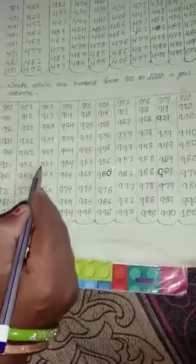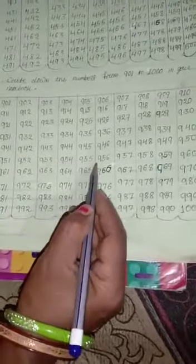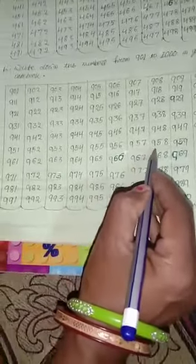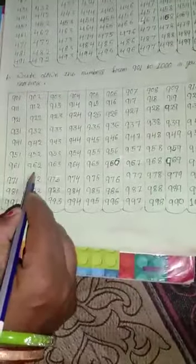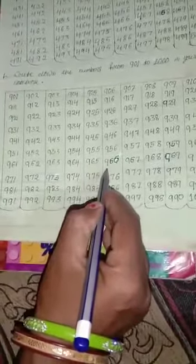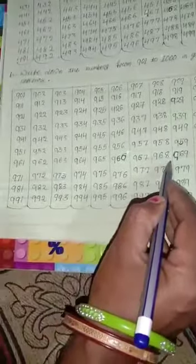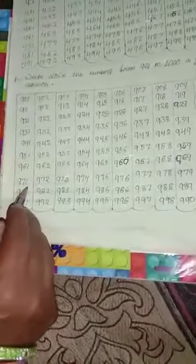951, 952, 953, 954, 955, 956, 957, 958, 959, 960, 961, 962, 963, 964, 965, 966, 967, 968, 969, 970.